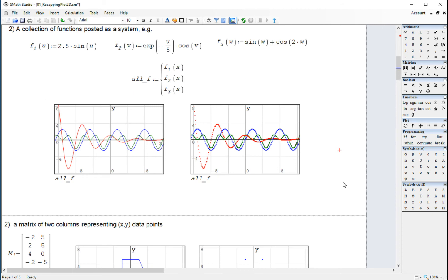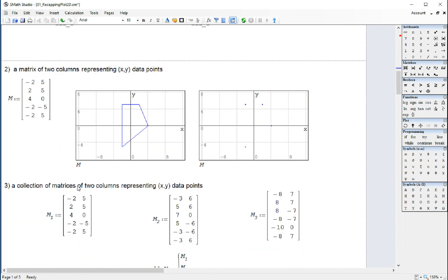So that's how you would plot a function. Now, how do you plot the matrix representing x, y data points? If you want to plot the polygon, you put the coordinates of the vertices as x, y columns in a matrix of two columns.